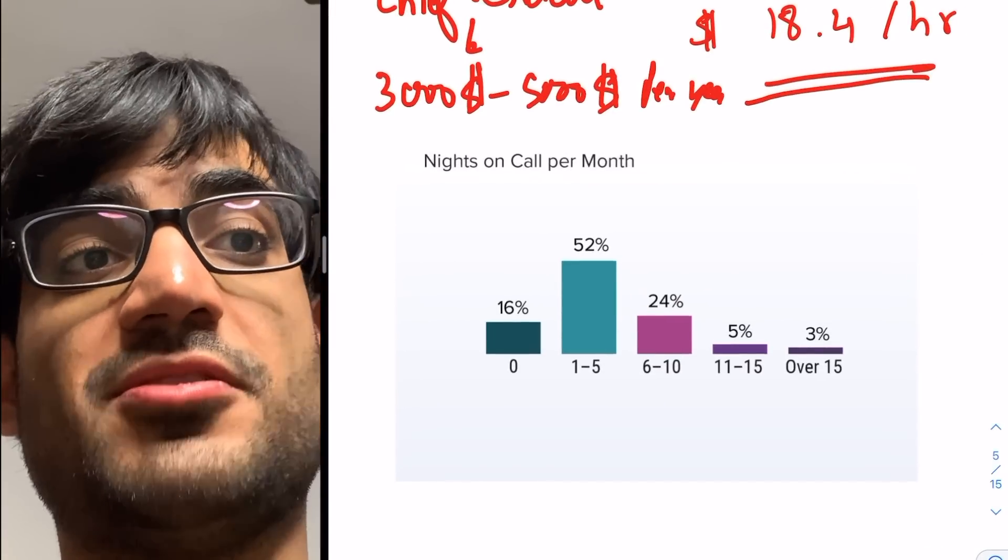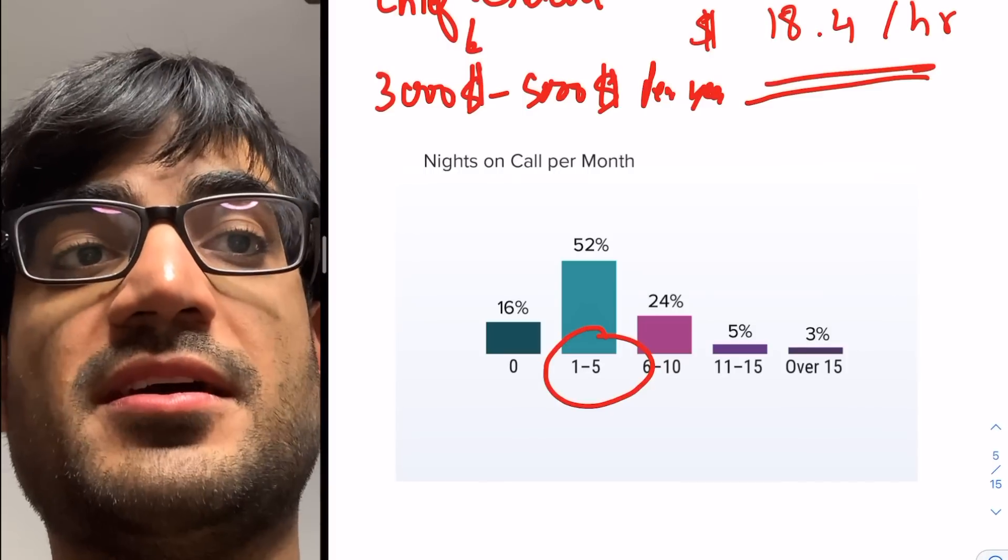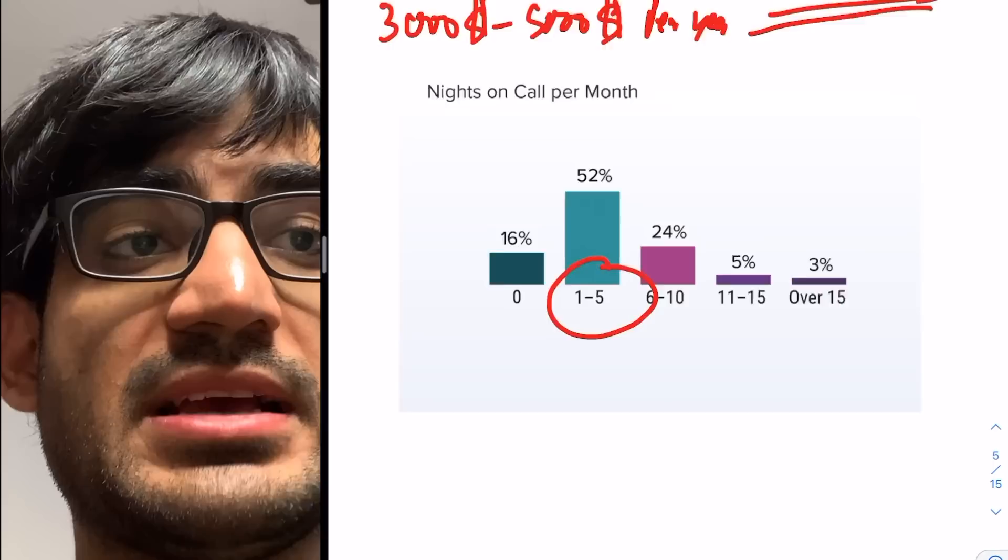Another thing to consider is nights on call per month. So most residents work about one to five nights on call per month.